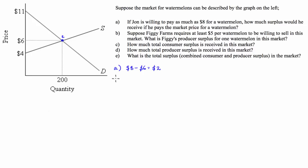For producer surplus, it's exactly the same method as consumer surplus. It's the difference between the market price — which is $6 — and the price that the producer is willing to sell at, which is $5. So the difference here is just $1.